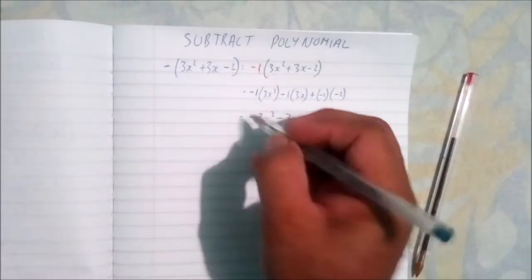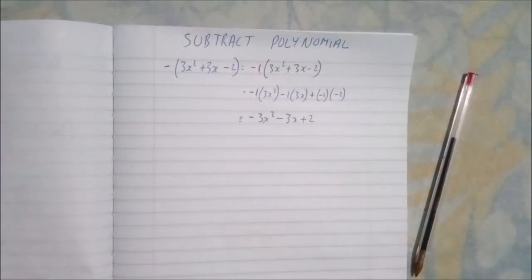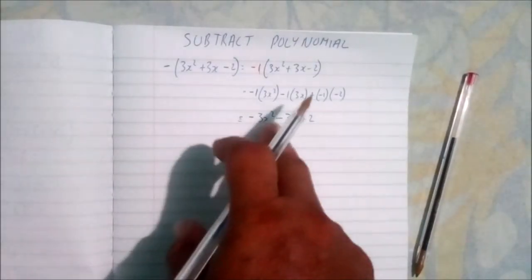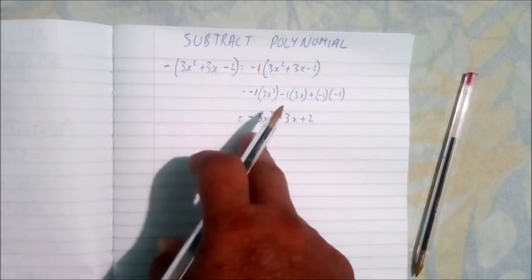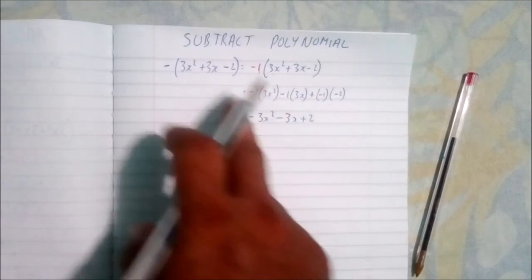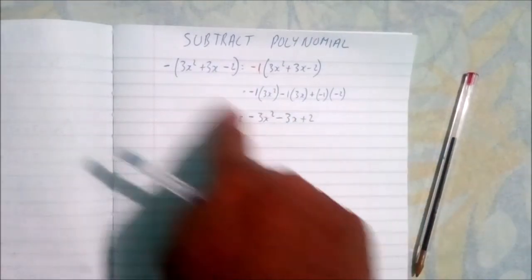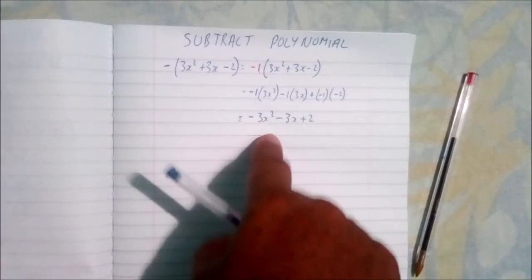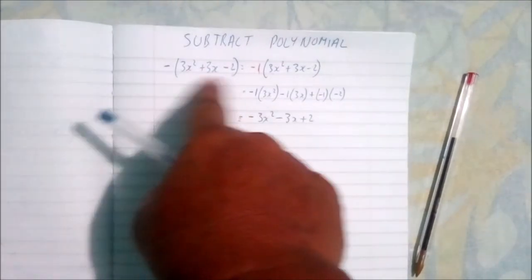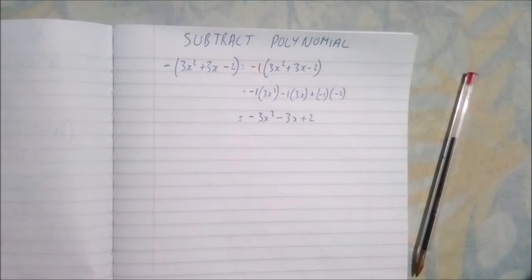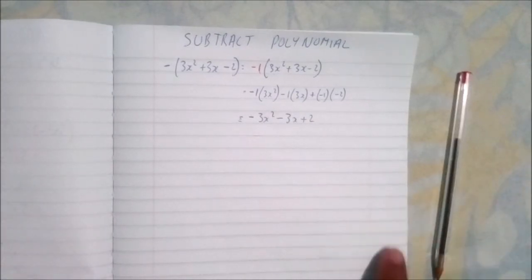This suggests that the way to subtract polynomials is to remove parentheses, change the sign of each term of the second polynomial, and combine like terms. Let's try some examples — find each difference.